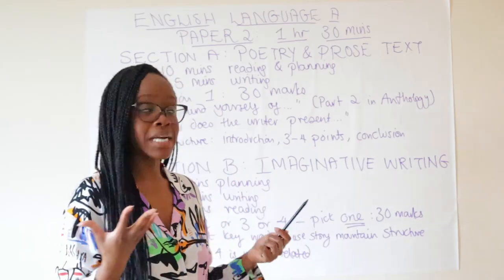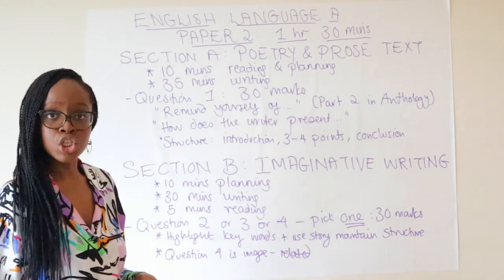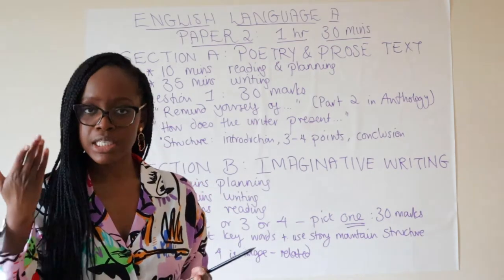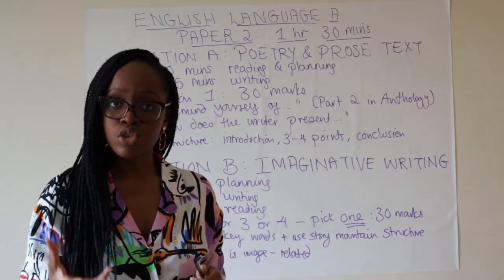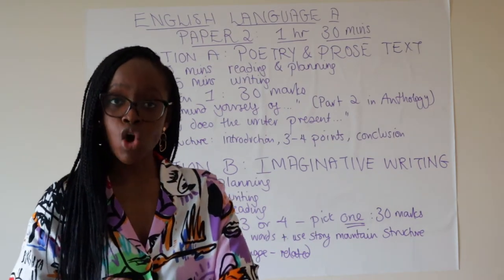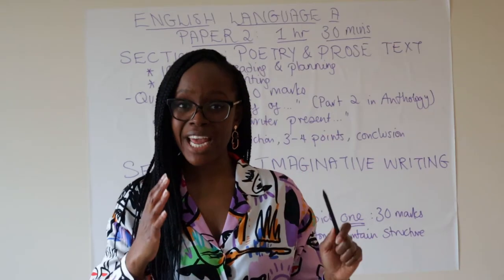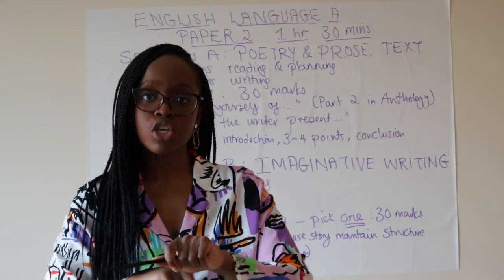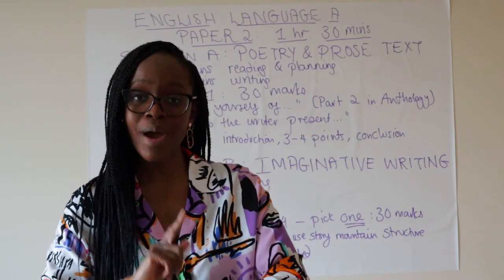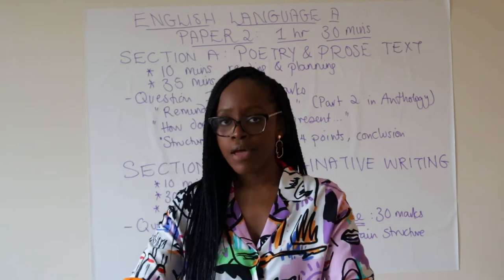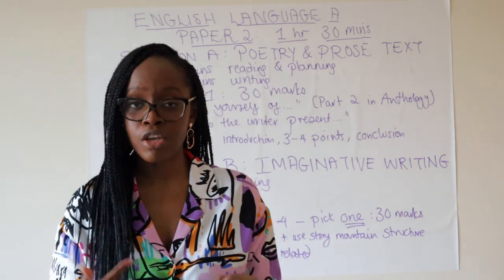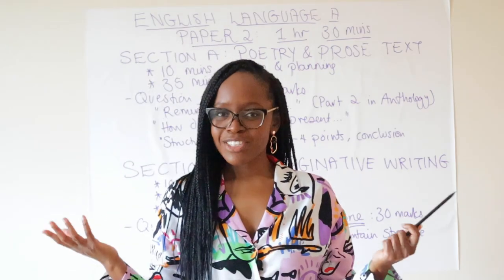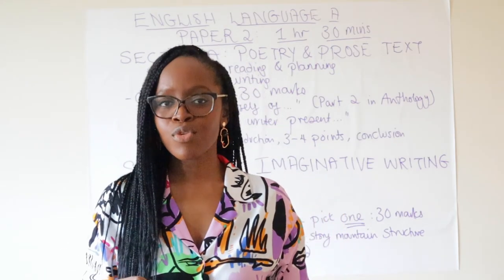That's really it in terms of what to anticipate for the English Language Paper 2 exam. Bear in mind it's one hour and thirty minutes — split it evenly between Section A and Section B. Do not spend 50 minutes on Section A and rob yourself of marks in Section B. Treat your timings as essential and sacred, set aside time for planning and writing, and check your answers — especially for the creative writing side.